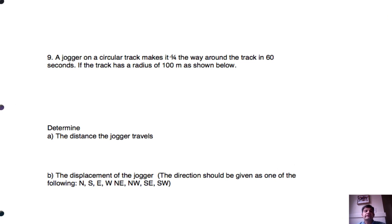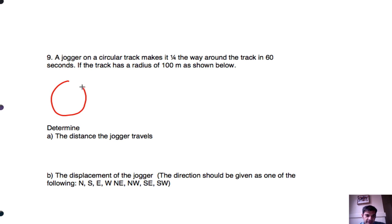These are some of our distance and displacement problems. And we're going to do a little work on this and go ahead and just jump in and get started. So we have a jogger on a circular track and makes it a quarter of the way around the track in 60 seconds. And the track has a radius of 100 meters. We actually didn't show it below, so let's go ahead and show that now. So here's the track. Here's the radius of 100 meters. And whenever we say that a jogger starts a track, we're going to start them with a positive x axis. We're going to start them there on the right. And then they make it a quarter of the way around right there.